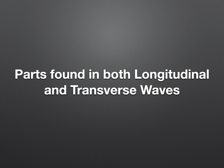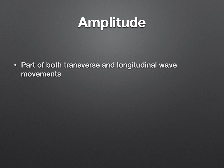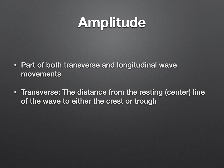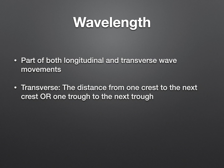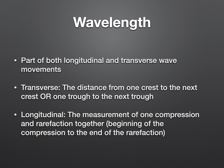Some parts are found in both types of waves. The first is amplitude, found in both movements. In transverse waves, it's the distance from the resting center line to the trough or the crest — the higher the trough or crest, the more amplitude or energy it has. In longitudinal waves, it's a measurement of one full compression — the bigger the compression, the more amplitude or strength that wave has. Wavelength is also found in both. In transverse waves, it's the distance from one crest to the next crest or one trough to the next trough. In a longitudinal wave, you take one full compression and one full rarefaction together to show one wavelength, as we showed in our models today.